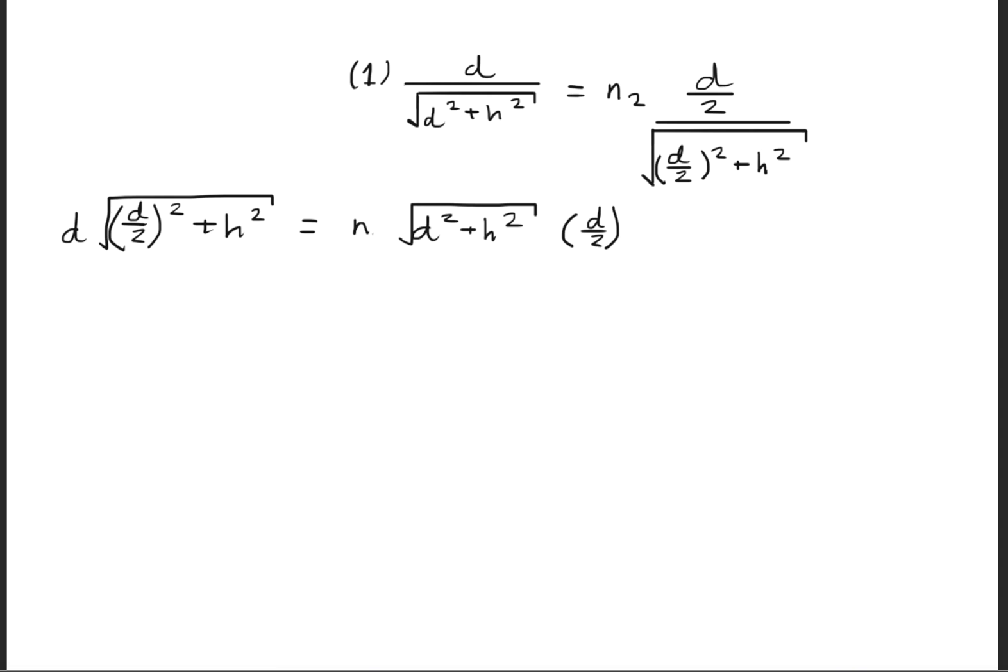This is one way we could go about proving that equation. We'll go ahead and relabel this n2 and just call it n. So we'll cross multiply both sides so that we get d times the square root of d over 2 squared plus h squared is equal to n times the square root of d squared plus h squared times d over 2.